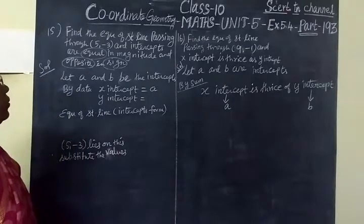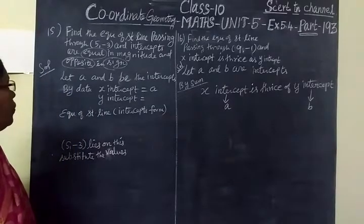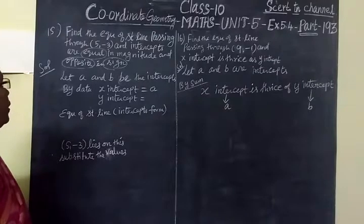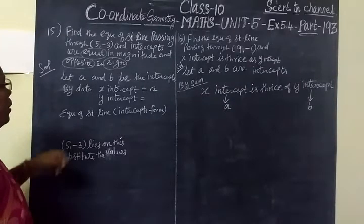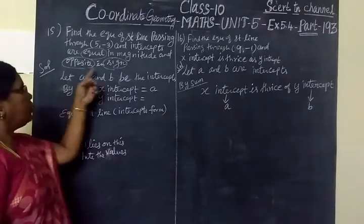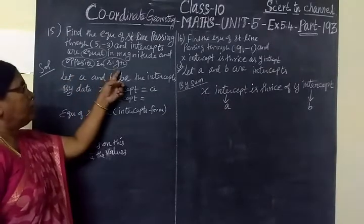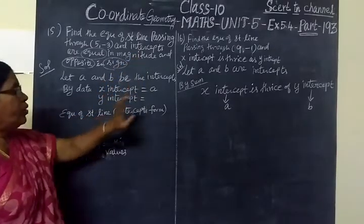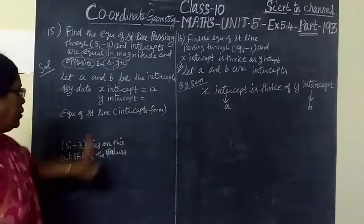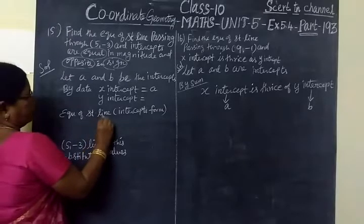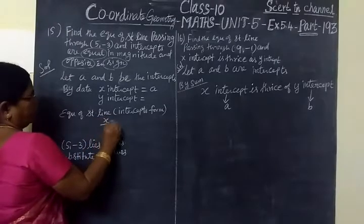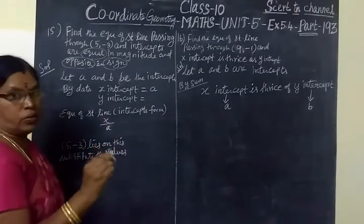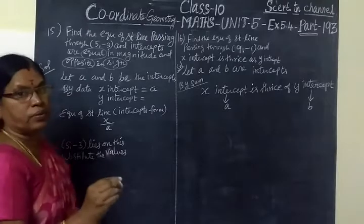Find the equation of the straight line passing through (5, -3) and the y-intercept is equal in magnitude and opposite in sign to the x-intercept. We will use the intercept form: x by A plus y by B equal to 1.